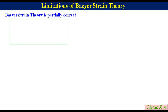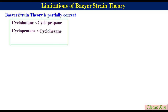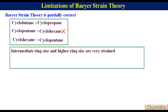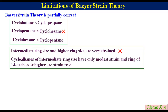Limitations of Baeyer Strain Theory. Baeyer Strain Theory is partially correct because cyclobutane is more stable than cyclopropane as described by the theory. However, this theory predicts cyclopentane to be more stable than cyclohexane, which is incorrect — in reality, cyclohexane is almost strain-free and is more stable than cyclopentane. This theory also predicts intermediate ring size and higher ring size to be very strained, which is also incorrect. In reality, cycloalkanes of intermediate ring size have only modest strain, and rings of 14 carbons or higher are strain-free.